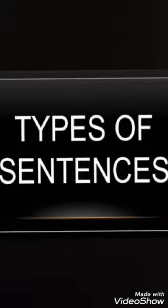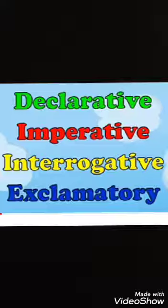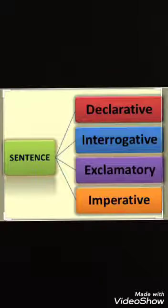Now we are going to see the types of sentences. There are four types of sentences. Children, how many types? Four types. That is: declarative, interrogative, exclamatory, and imperative.